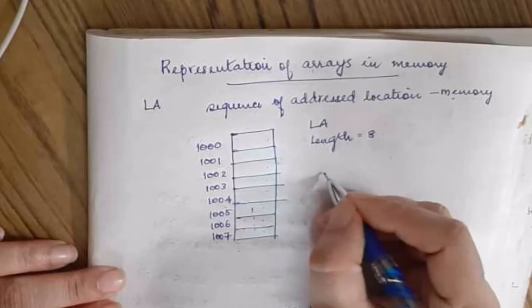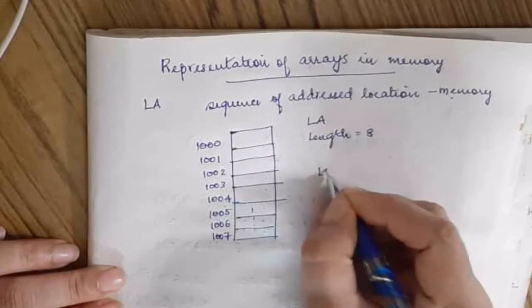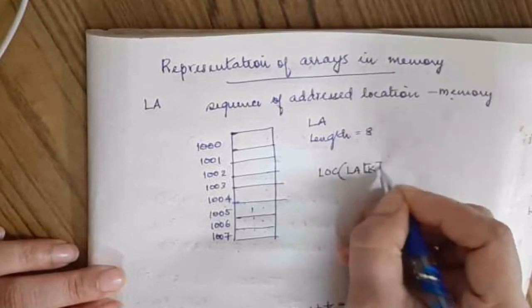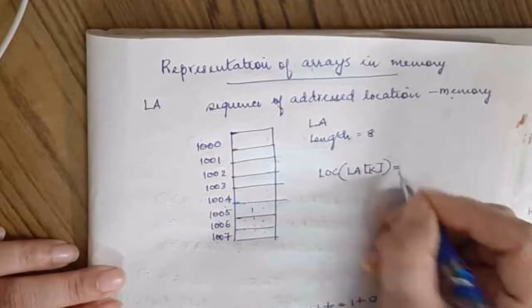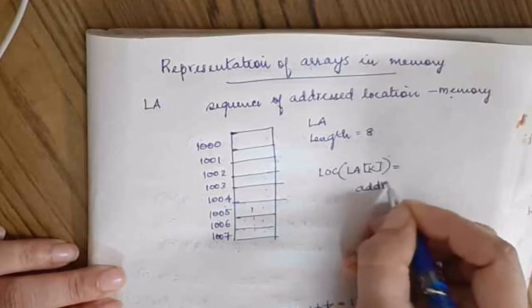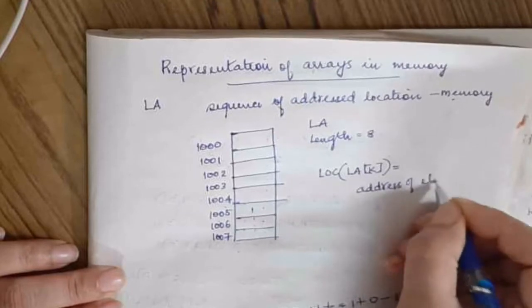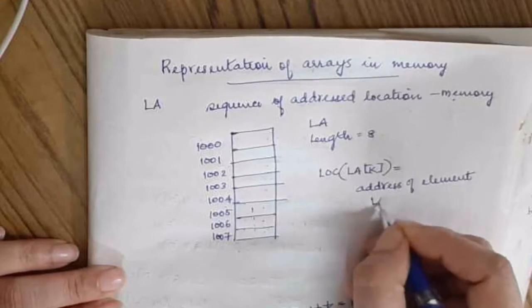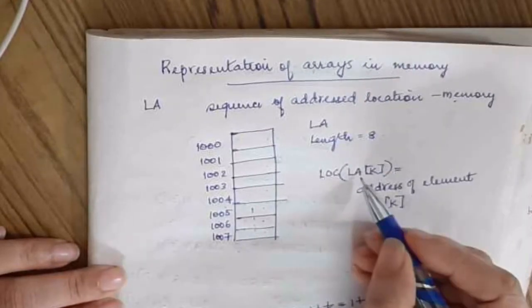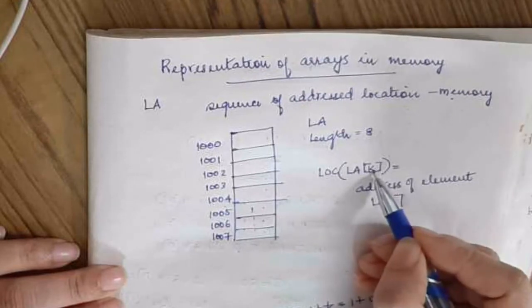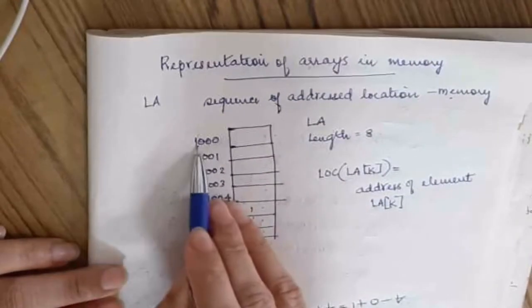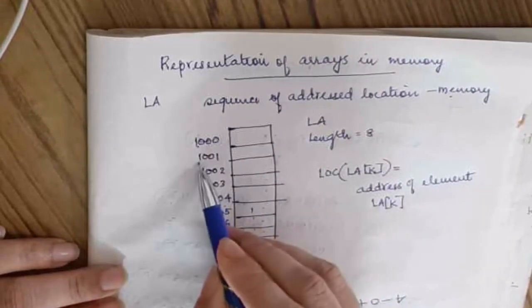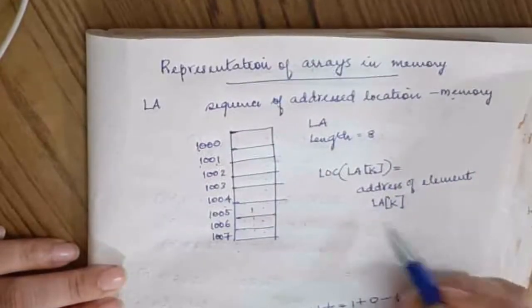The location of a particular element at index K is the address of that element. For example, Location of LA[1] is address 1000, Location of LA[2] is address 1001. That is the address of that element.